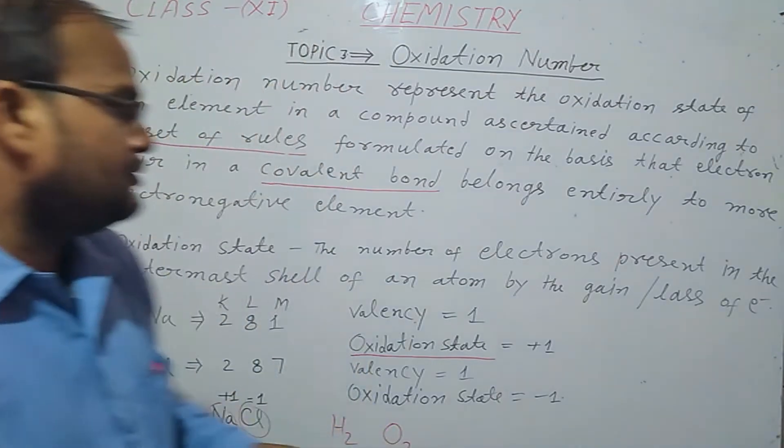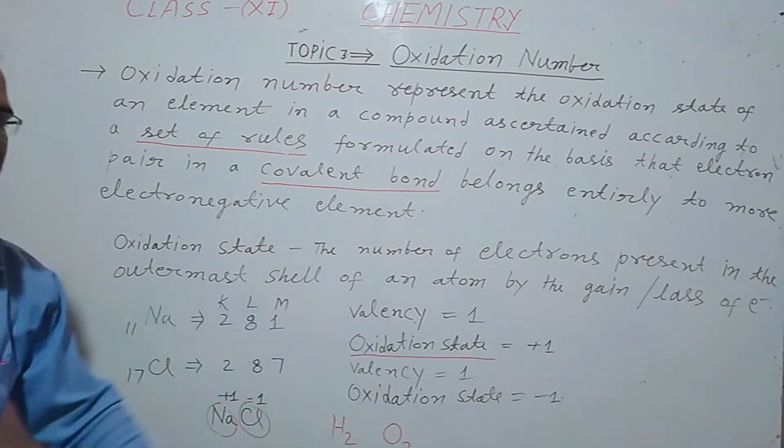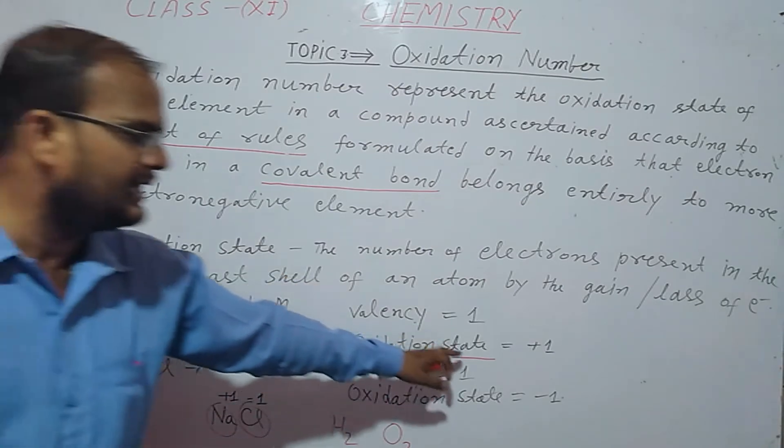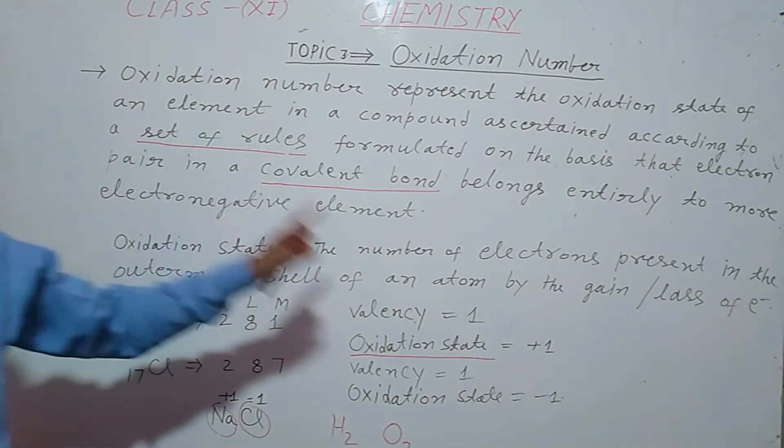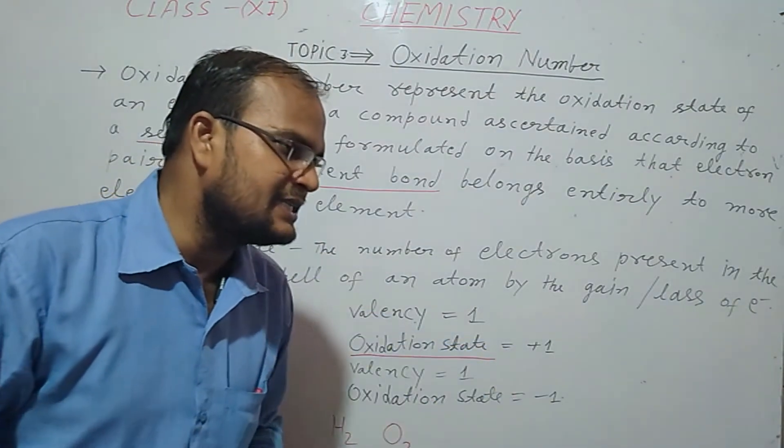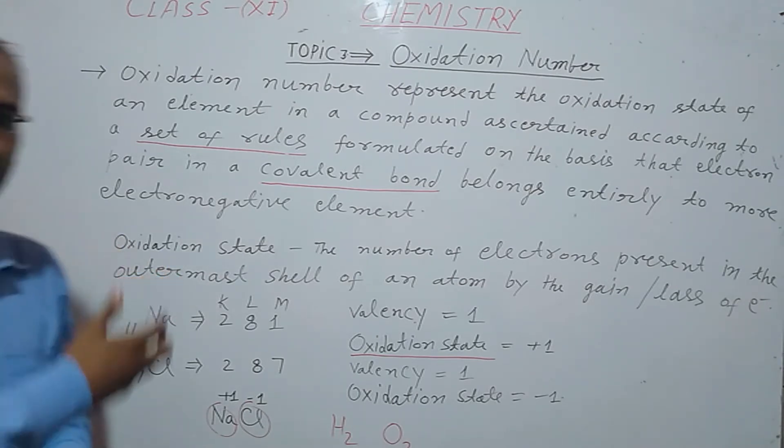The total number of electrons gained or lost by an atom in a compound is known as their oxidation state. Oxidation state is always plus, minus, zero, integer and whole number.